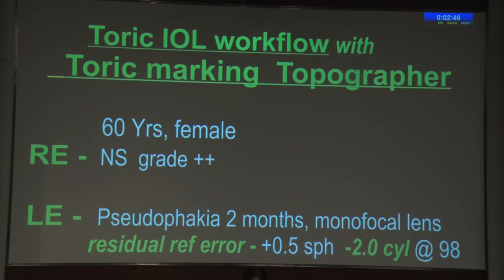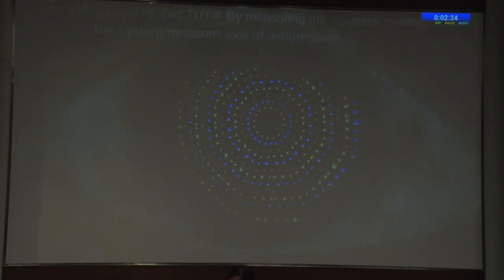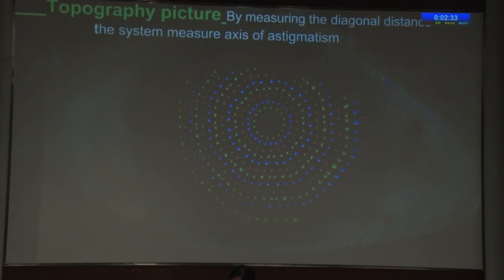Toric IOL workflow with toric marking topographer. A 60-year-old female with right eye nuclear cataract grade 2. Left eye pseudophakia, operated two months before. A monofocal lens was implanted and residual refractive error is 2 diopter cylinder. Without use of any eye drops, we can capture a topography picture of the eye.